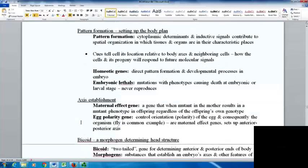To determine the axis, you have the maternal effect gene and the egg polarity genes. The maternal effect gene is a gene that when mutant in the mother results in a mutant phenotype in the offspring regardless of the offspring's genotype. The offspring can have perfectly fine genes, but if there's a mutation in the mother, it leads to a mutation in the offspring. The egg polarity gene controls the orientation of the polarity of the egg and consequently the organism.